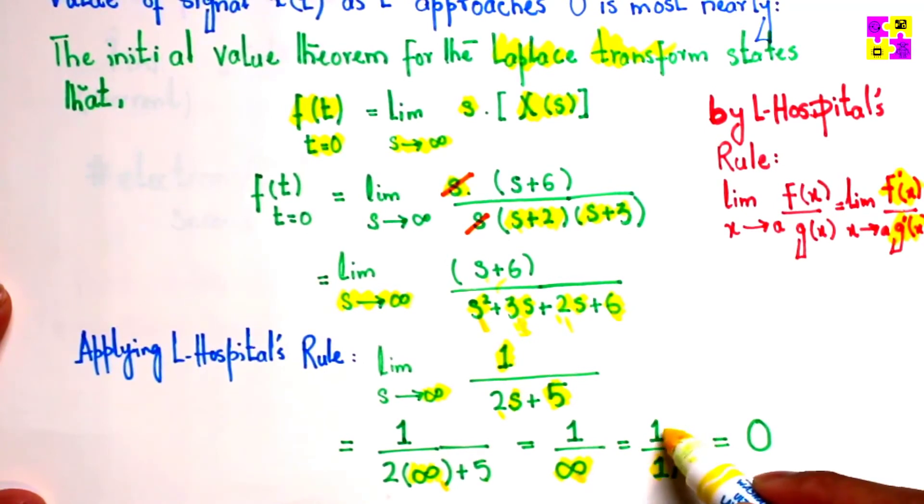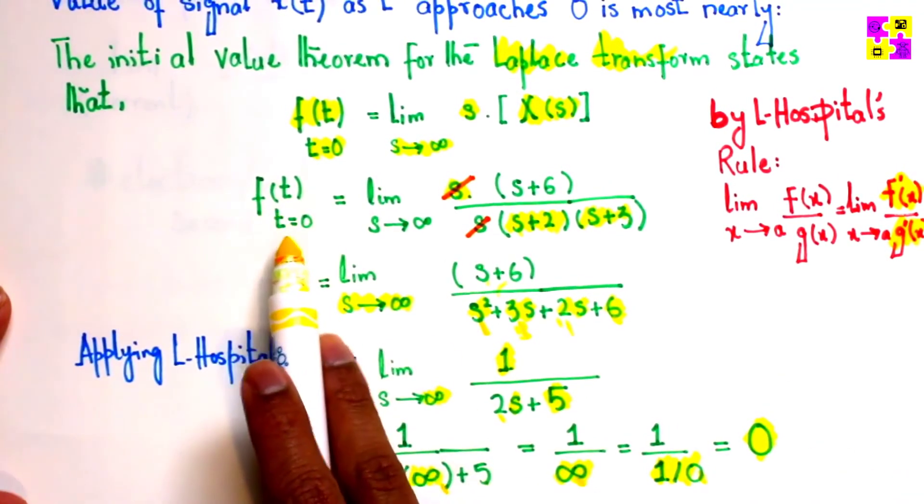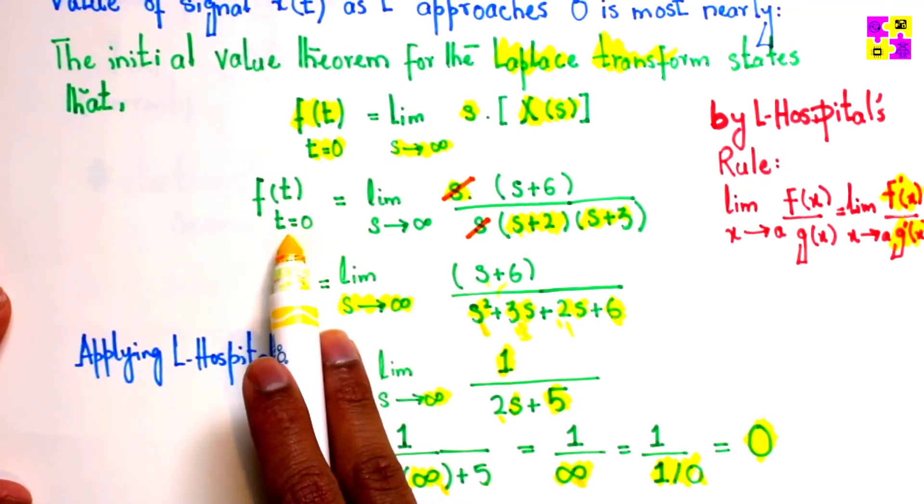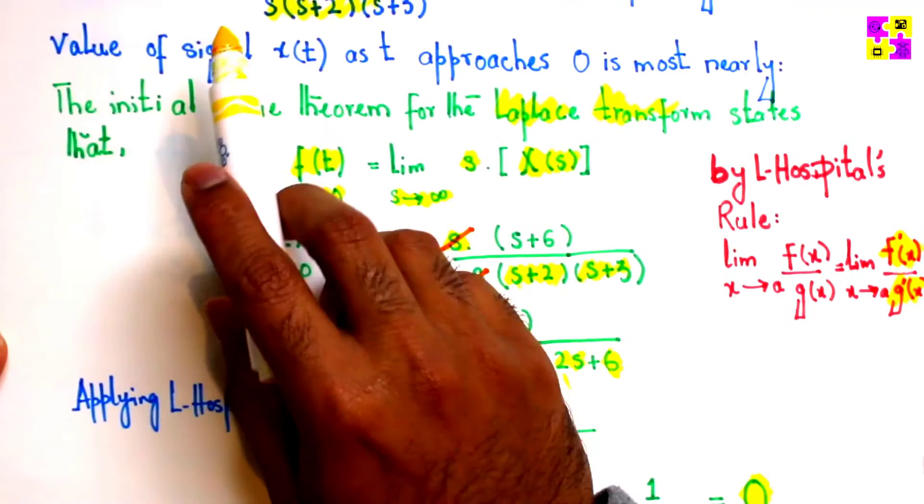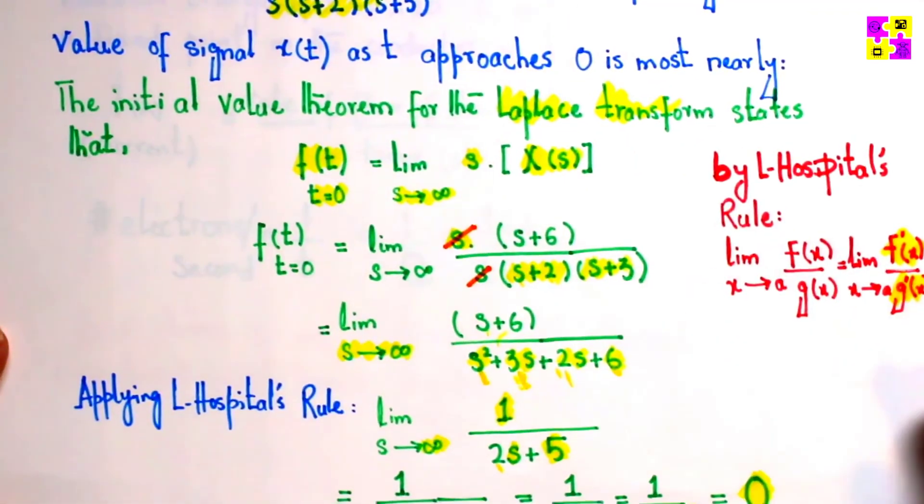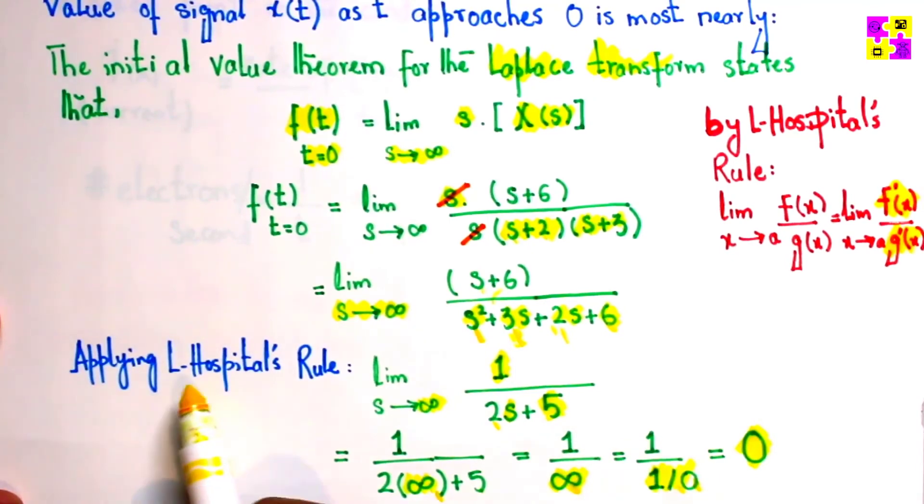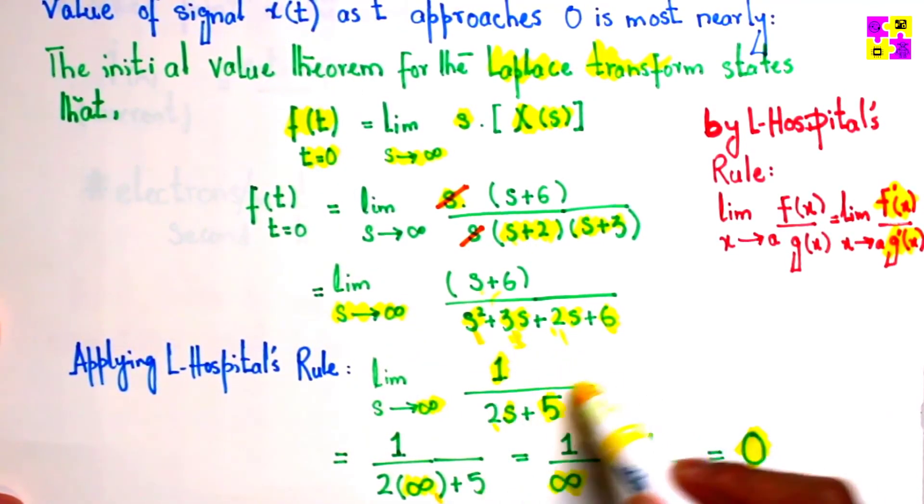And this 0 goes to the numerator and becomes 0. So f(t) at t equals 0, the value of the signal x(t) is going to be 0. Remember, applying L'Hospital's rule is extremely important here to get to this transformation.